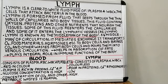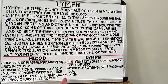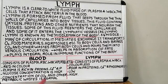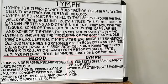The concentration of CO2 and other metabolic wastes is normal in blood, whereas in lymph the concentration of CO2 and other metabolic wastes is high.